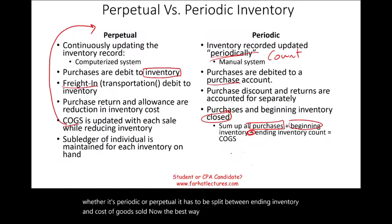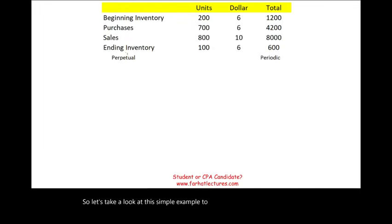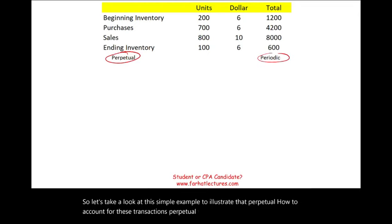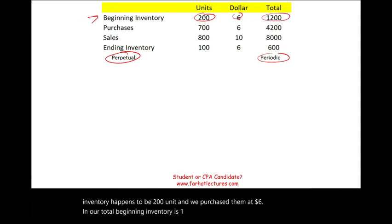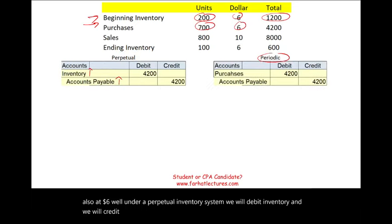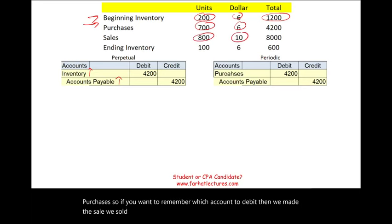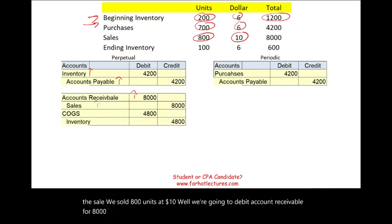Let's work a short example to illustrate perpetual versus periodic. Our beginning inventory is 200 units purchased at $6 each, totaling $1,200. Then we made a purchase of 700 units also at $6. Under the perpetual system, we debit Inventory and credit Accounts Payable. Under the periodic system, we debit an account called Purchases and credit Accounts Payable — notice the difference. Then we made a sale of 800 units at $10, so we debit Accounts Receivable for $8,000 and credit Sales for $8,000.